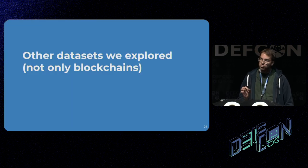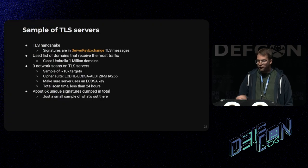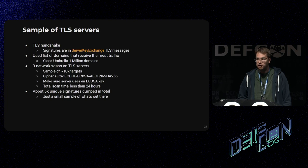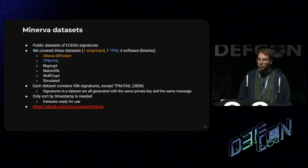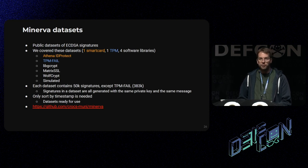We also had a look at two more sources that are not blockchain-related. The first is a sample of TLS servers. If you make a TLS handshake with a server and the key is an ECDSA key, it's going to send you an ECDSA signature — so that's what we collected. The second one is a set of datasets from the Minerva attack. These are publicly available ECDSA signatures generated from TPMs, smart cards, and a bunch of software libraries.